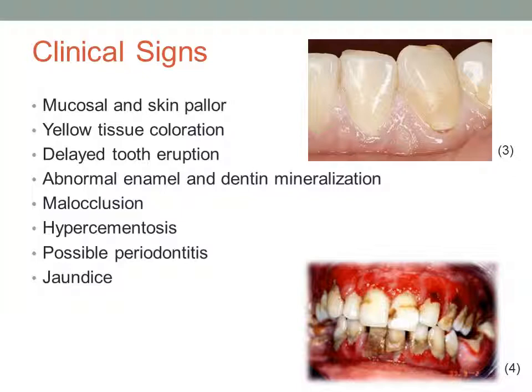Clinical signs of patients with sickle cell anemia include, but are not limited to, mucosal and skin pallor and yellow tissue coloration, which is shown in the image on the top right. Some patients may also show delayed tooth eruption, abnormal enamel and dentin mineralization, malocclusion, or even hypercementosis. Another symptom may be periodontitis, which is shown in the image on the bottom right.